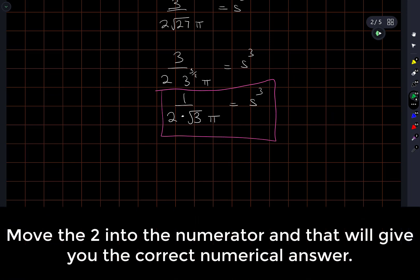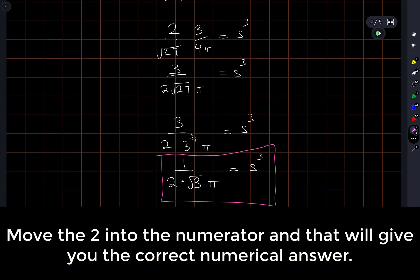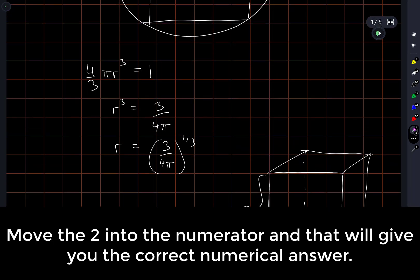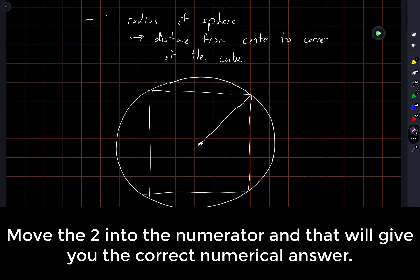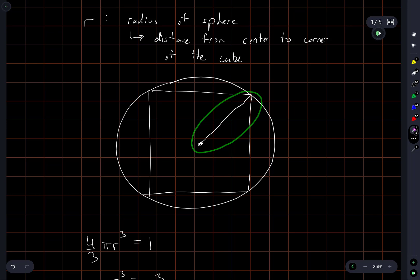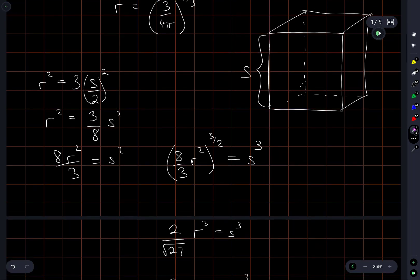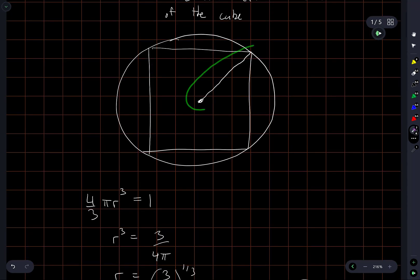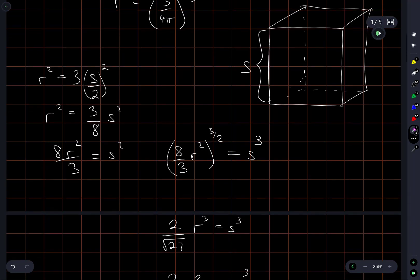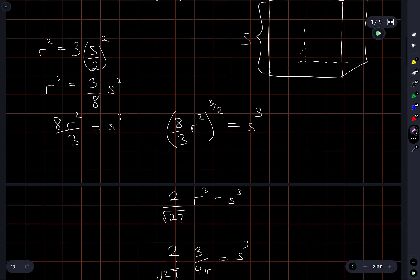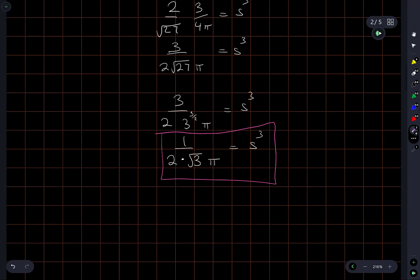So there we go — a geometrical problem, so draw a picture so you can see what you're doing. The key insight is that the half-diagonal of the cube equals the radius of the sphere. Writing the formula for the volume of a sphere and solving for r was straightforward, but the two important steps were recognizing that the half-diagonal equals the radius, and applying the Pythagorean formula to half the side length to relate it to the half-diagonal. That's our answer, thanks for watching.